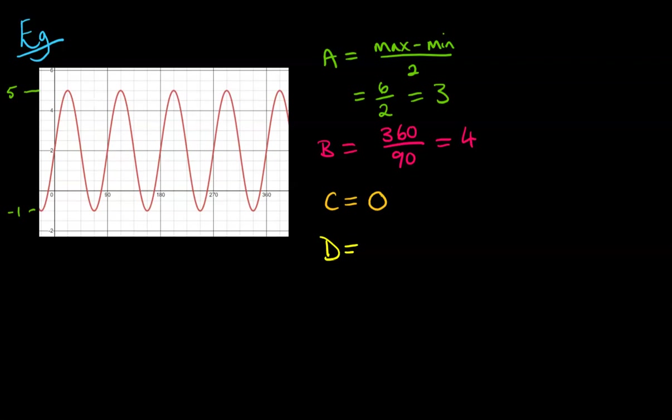And finally, the value of D, which is the vertical shift, and for that we do the maximum plus the minimum and divide it by 2 to get that halfway line, which we actually just kind of looked at when we were doing the shift there. So this will be 5 plus minus 1, which is 4, divided by 2 equals 2, and it gives us that halfway line here that we were talking about just before.